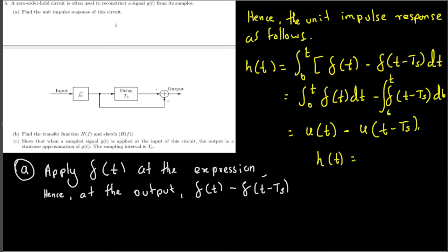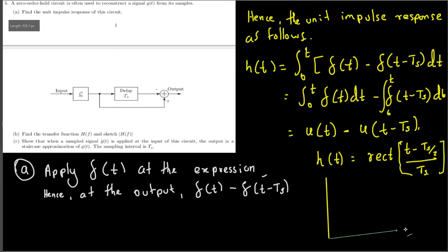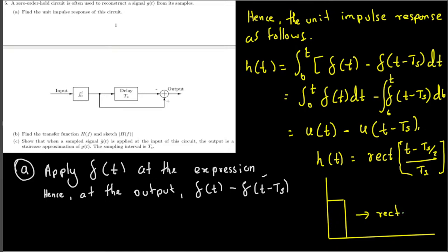The unit step function difference can also be expressed as a rectangular function: rect((t − T_s/2) / T_s). Drawing this, it is a rectangular pulse with height 1 and period T_s, starting at t = 0 and ending at t = T_s.